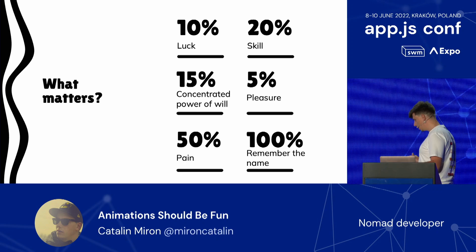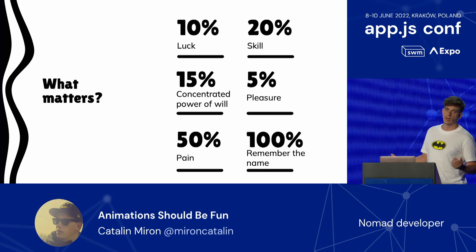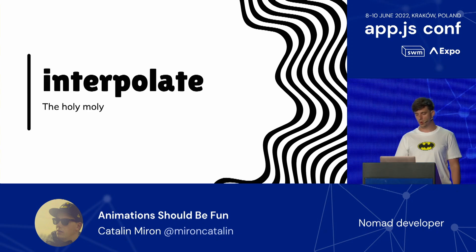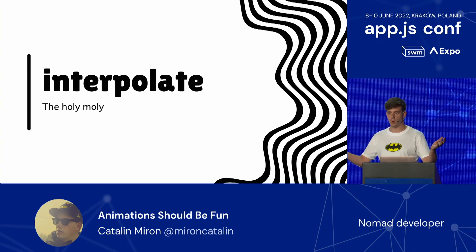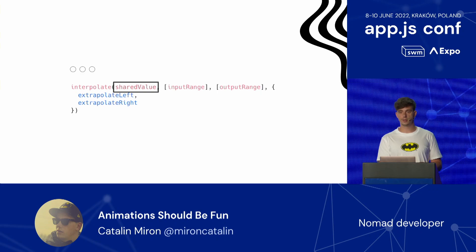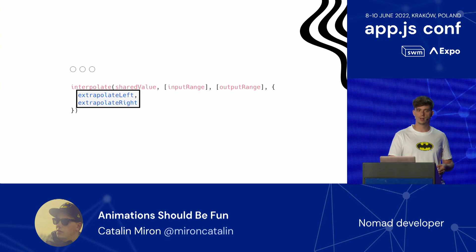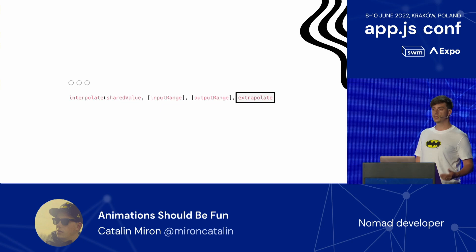Now that we've set up the ground for the most important primitives, let's go to what matters most: animating stuff. In my opinion, the most important primitive by far is interpolate. Interpolate is going to remap your values based on an input range and output range, giving you endless possibilities. You pass a shared value, an input range, an output range, an extrapolate left, and an extrapolate right. If those two extrapolations are equal, you can use the shorthand and pass the extrapolation directly. By default, the extrapolation is set to extend — and you'll see in a minute what extend actually means.